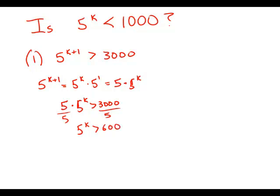Well, knowing that 5 to the k is greater than 600 doesn't answer the question, is it less than 1,000? It could be slightly bigger than 600, or it could be extravagantly bigger than 600. When it comes right down to it, there's a whole infinity of the number line that is larger than 600, and we don't know where on that infinity 5 to the x falls. So this statement by itself is simply not sufficient.